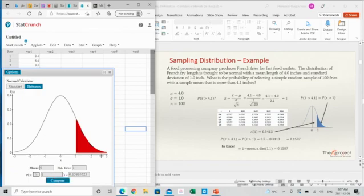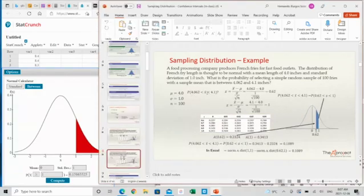In case the problem is the probability that x bar will be between 4.062 and 4.1, you need to convert this to the normal distribution. Converting this to the normal distribution is using the z-score of each of these two numbers. You transform the problem that was in a normal distribution to the standard normal distribution. Now the question is, what is the probability that z will be between these two numbers, 0.62 and 1?